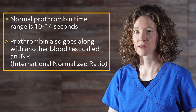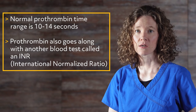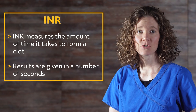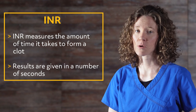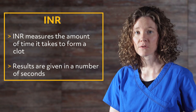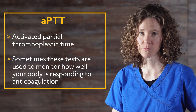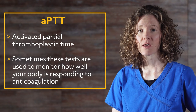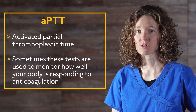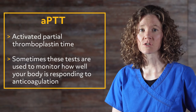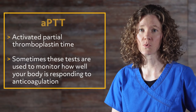Prothrombin also goes along with another blood test called an INR, which stands for International Normalized Ratio. INR measures the amount of time it takes to form a clot, and results are given in a number of seconds. Another test that goes along with these is called the APTT, which stands for activated partial thromboplastin time — another set of clotting factors. Sometimes these tests are used to monitor how well your body is responding to anticoagulation therapy, such as with drugs like heparin or warfarin.